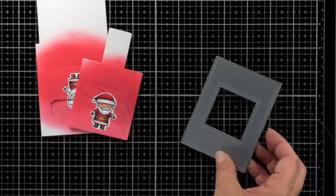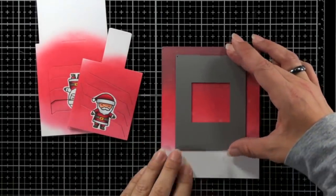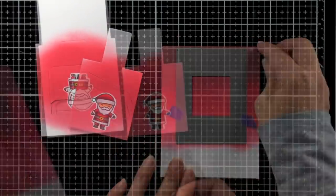I'm also going to die cut one of those ink blended panels that we did. We had done two of them. And this is actually using that frame, this is the magic picture changer add-on. And so I'm going to run that through my die cut machine as well.